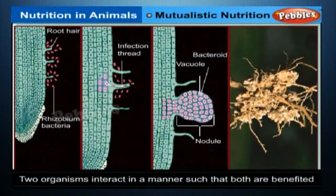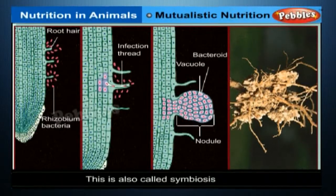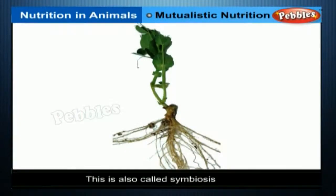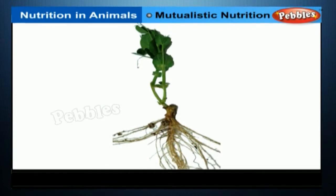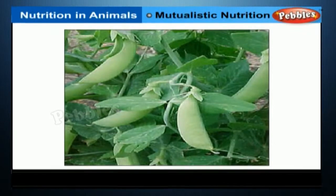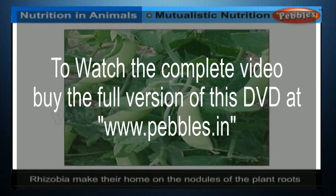In mutualistic nutrition, two organisms interact in a manner such that both are benefited. This is also called symbiosis. A very good example of mutualistic nutrition is the association between bacteria called rhizobia and plants belonging to the pea family. Rhizobia make their home in the nodules of the plant roots.